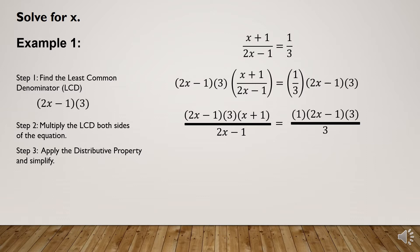Before we simplify both sides, we check for common factors in numerator and denominator. On the left side, the common factor is (2x - 1), so we cancel it. On the right side, the common factor is 3, so we cancel that as well. Then we copy the remaining factors on both sides.